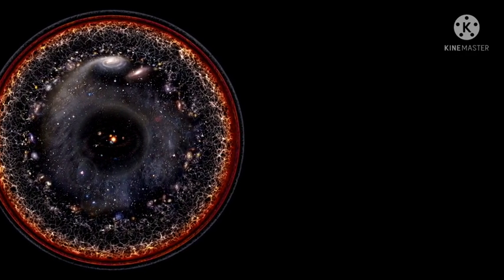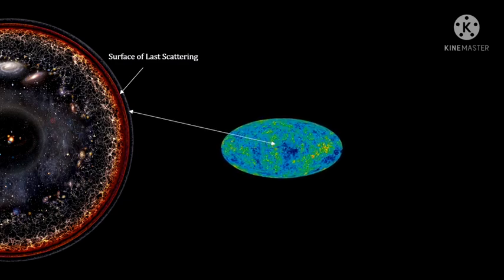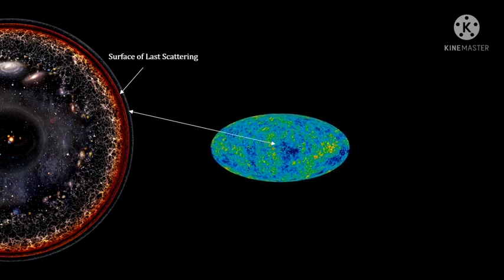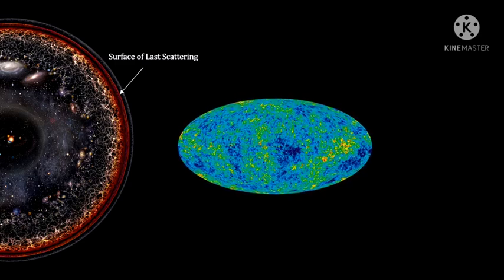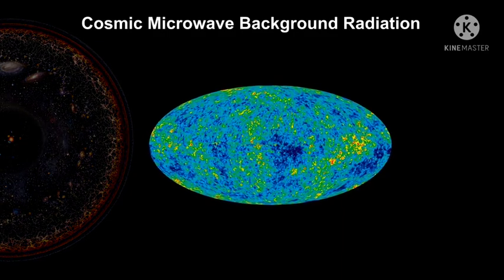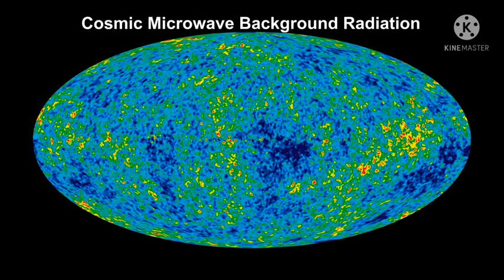Coming back the other way, the surface with a transition from opaque to transparent is called the surface of last scattering. At that time, all the photons in the universe were released. These photons are still with us today. We see them all across the sky in tremendous numbers. They are the cosmic microwave background photons, CMB, and they tell us a great deal about the past, present, and future of the universe.